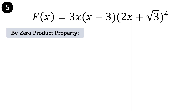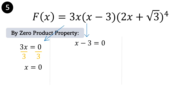f of x equals 3x times the quantity x minus 3 times the quantity 2x plus square root of 3 raised to the 4th power. Applying the zero product property, starting with 3x equals 0: divide both sides by 3 to get x equals 0. Next: x minus 3 equals 0; add 3 on both sides of the equation. We have x minus 3 plus 3 equals 0 plus 3. Simplify: x therefore is 3.